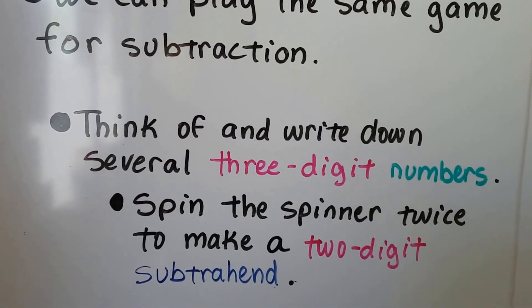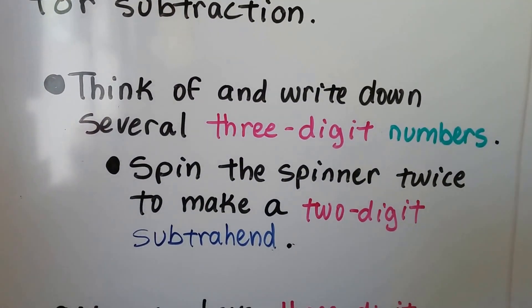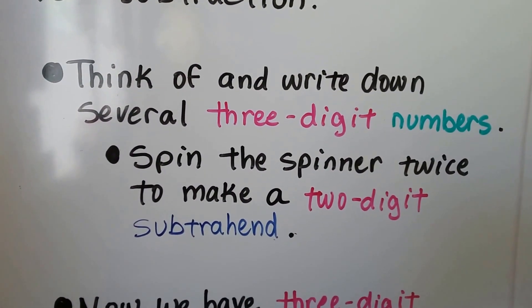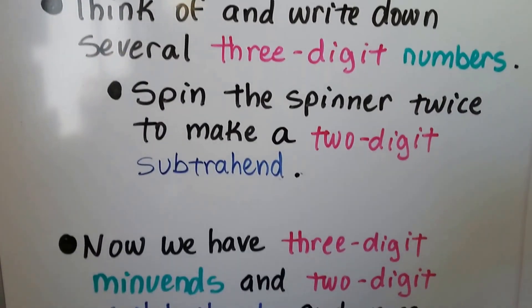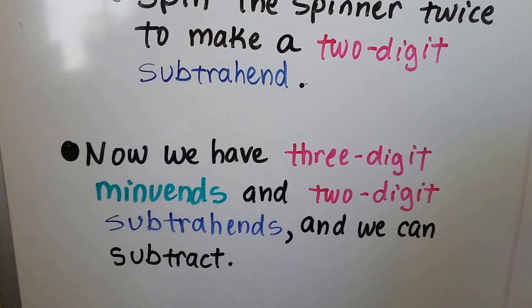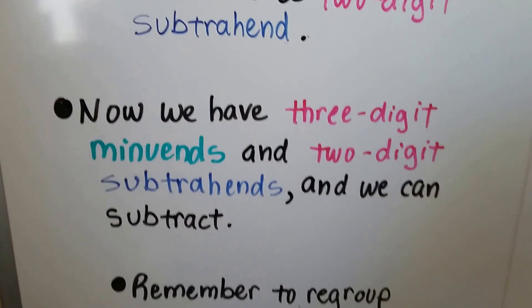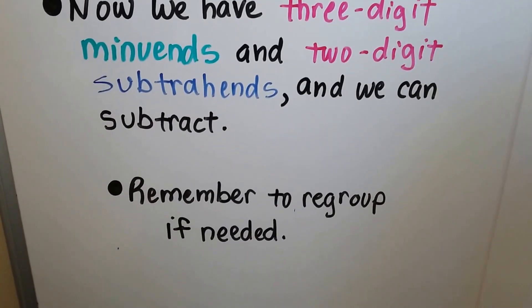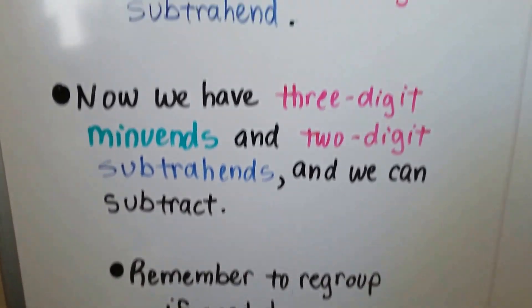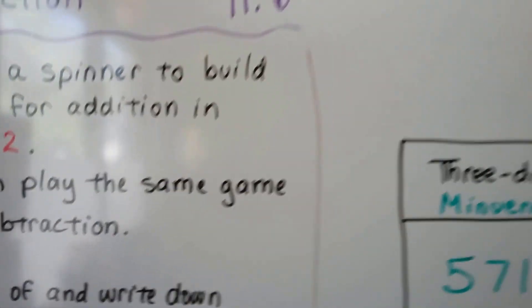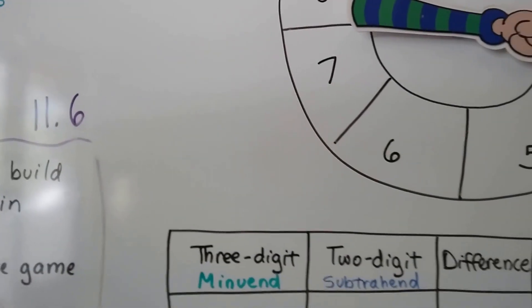Think of and write down several 3-digit numbers. We spin the spinner twice to make a 2-digit subtrahend. Now we have 3-digit minuends and 2-digit subtrahends, and we can subtract. Remember to regroup if needed. Remember, the first number is the minuend, the second number is the subtrahend, and the answer is the difference.